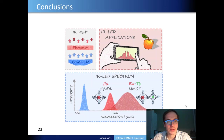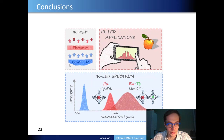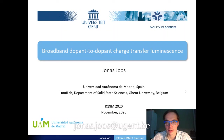In conclusion, we investigated broadband infrared emission from metal to metal charge transfer between Europium and Terbium in a calcium sulfide host, and used multi-configurational ab initio calculations to explain the luminescence mechanism. This work is potentially useful for future applications in infrared spectroscopy on handheld electronics, for instance using a phosphor-converted LED based on a blue pumping LED with a broadband infrared phosphor. I would like to thank my collaborators, and thank you for your attention — if you have questions please don't hesitate to mail me.